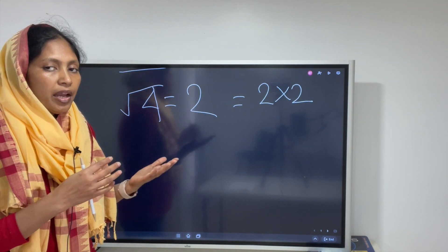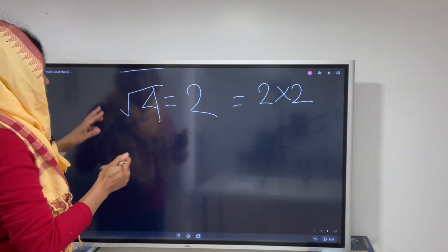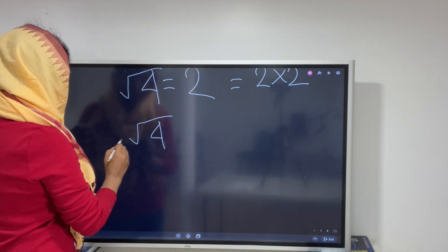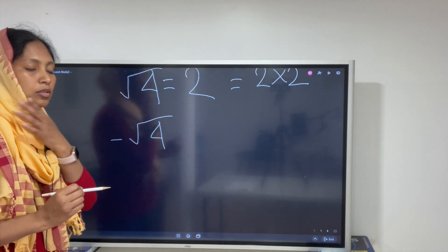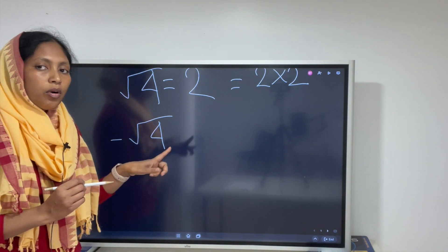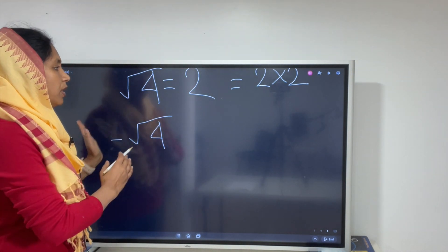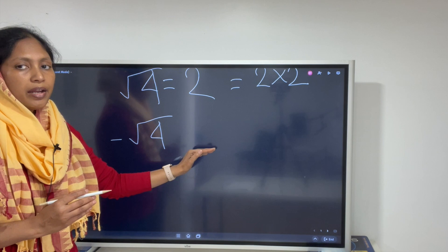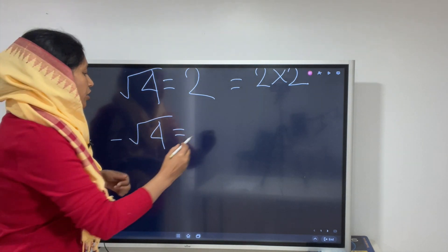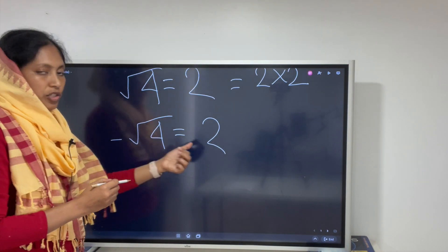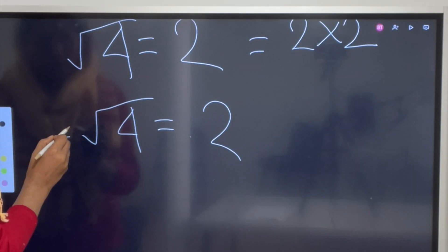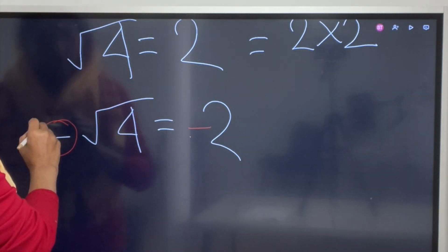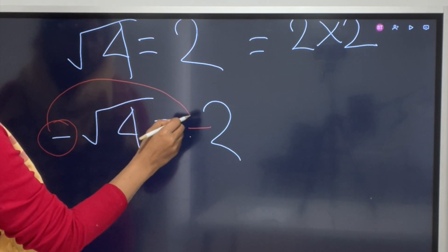When you see a negative sign inside or outside of the square root, how do you solve that? For example, if you have square root of 4 with a negative sign outside, all you need to do is transfer that negative sign to the answer side. Since square root of 4 is 2, you just move the negative sign there, giving you negative 2.